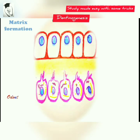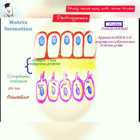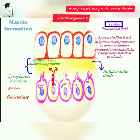For matrix formation, the odontoblast secretes collagenous and non-collagenous proteins into the extracellular region towards the inner enamel epithelium. They have protein-rich fluid called proline, which appears in the rough endoplasmic reticulum and Golgi apparatus, then migrates to cell processes in dense granules and is emptied into the extracellular collagenous matrix of the predentine. The initial mantle dentine matrix has type 1 collagen and von Korff fibers comprising type 3 collagen.